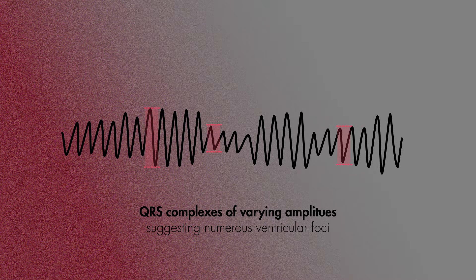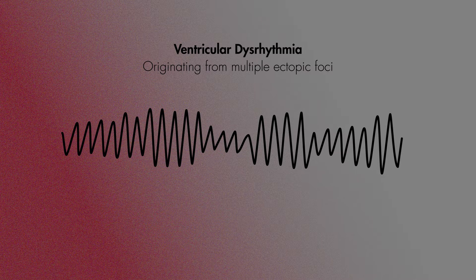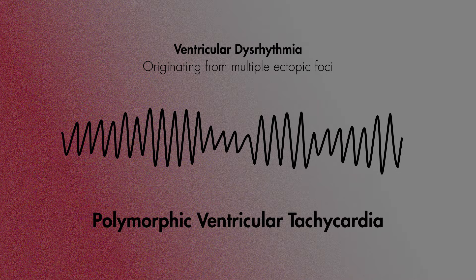Taking a step back, we could also see how these complexes have varying shapes and amplitudes. So putting this all together, hopefully you could get a sense that torsades is a ventricular cardiac dysrhythmia originating from multiple ectopic foci, or better described as a polymorphic ventricular tachycardia.